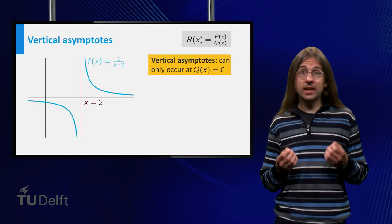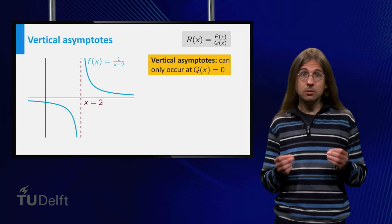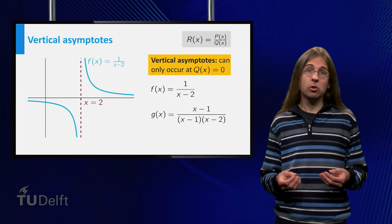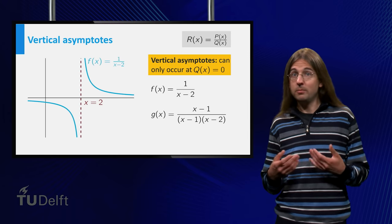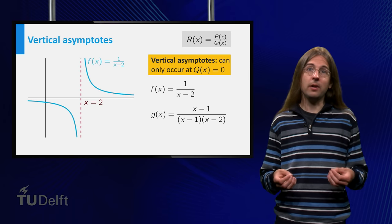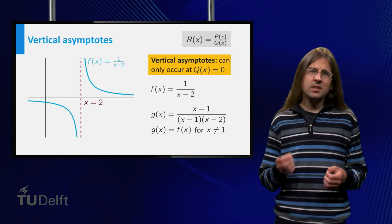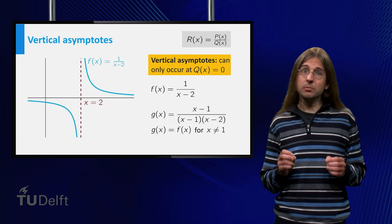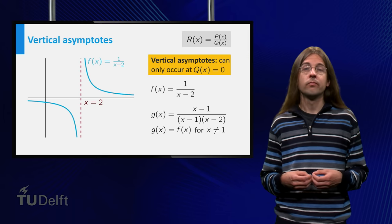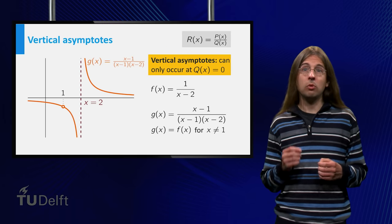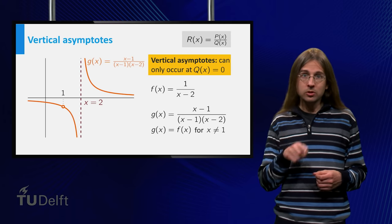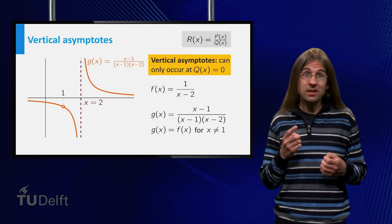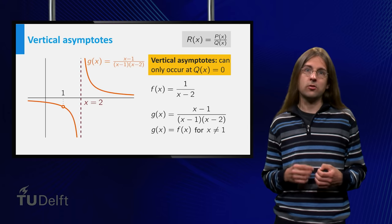A rational function can only have vertical asymptotes at zeroes of the denominator. Now consider g equals (x minus 1) over (x minus 1) times (x minus 2). This can be simplified to f. However, g is not defined at x equals 1, whereas f is. Apart from this difference in domain, the functions are equal. In the graph we denote the fact that 1 is not in the domain by adding an open circle at x equals 1. Notice that g has no vertical asymptote at x equals 1, even though this is a zero of the denominator.